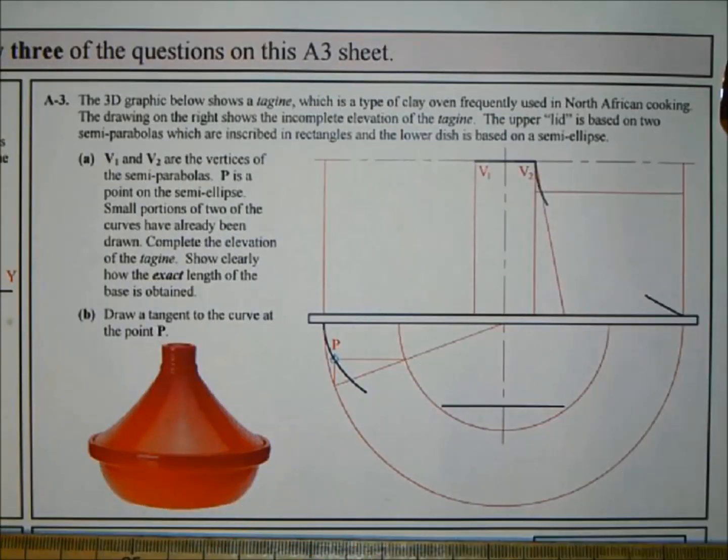Okay, hi and welcome to another D2G tutorial. In this question we're working on the 2014 paper, section A, question A3. The 3D graphic below shows a tagine, which is a type of clay oven frequently used in North African cooking. The drawing on the right shows an incomplete elevation of the tagine. The upper lid is based on two semi-parabolas which are inscribed in rectangles, and the lower dish is based on a semi-ellipse.